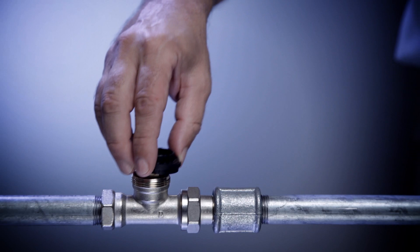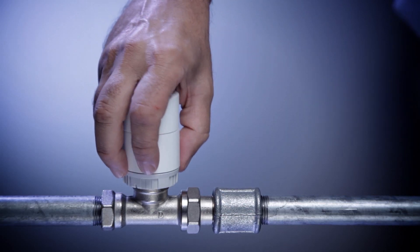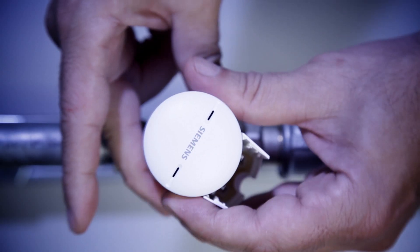Mounting is very simple. Just screw the bayonet adapter nut onto the valve, fit the actuator and turn it until two clicks can be heard.